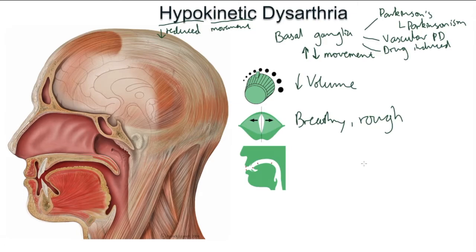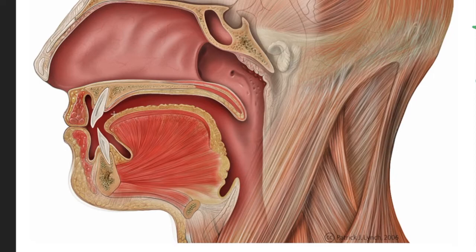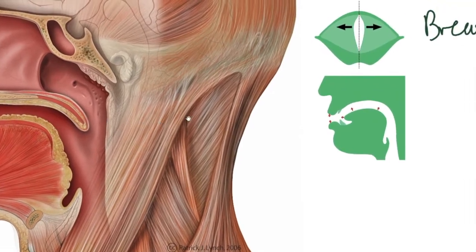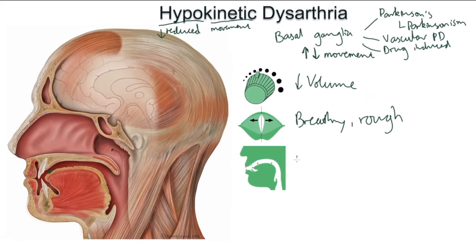The next feature is reduced articulation — the movements of the tongue are reduced. Rather than a nice strong T, the movement doesn't quite reach where it should, so you might just get a lowered T. Same with the lips, the movements just aren't very strong. Overall, articulation is not very clear or strong — it's undercooked, so to speak. You get under-articulation, which fits with the idea of reduced movement.